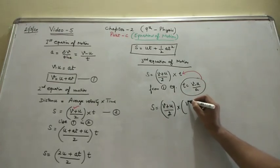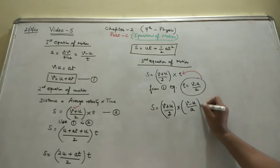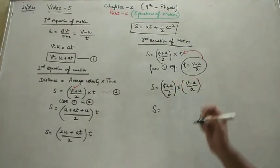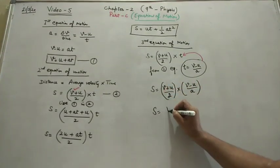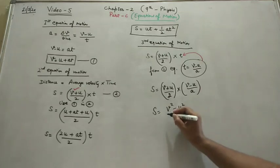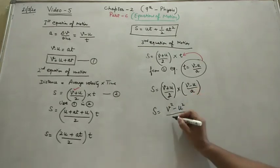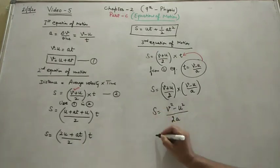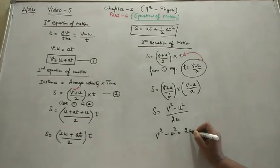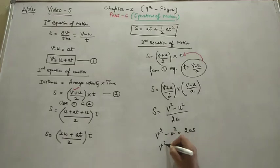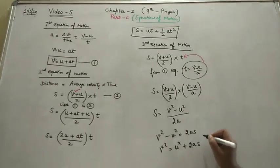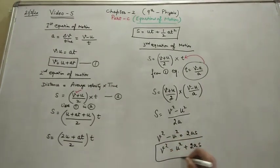The numerator of both expressions gives us V squared minus U squared, using the identity (a+b)(a-b) = a² - b². The denominator gives 2a. Rearranging, V squared minus U squared equals 2as, and we can simply write this as V squared equals U squared plus 2as. This is the third equation of motion.